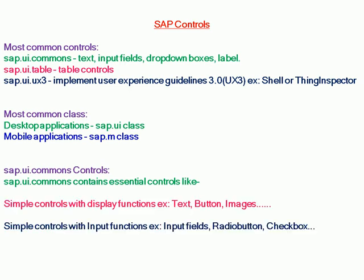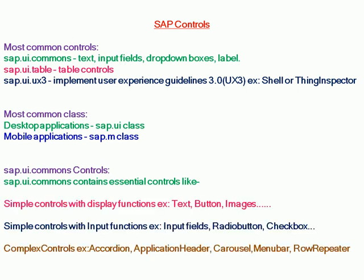sap.ui.commons controls: this class contains essential controls like simple controls with display functions — for example text, button, images — and simple controls with input functions — for example input fields, radio button, check box. It also includes complex controls such as accordion, application header, menu bar, and so on.